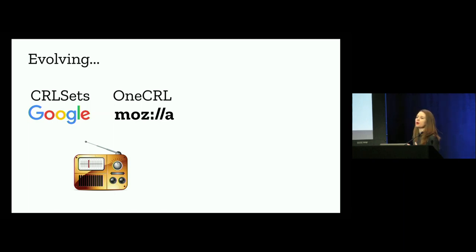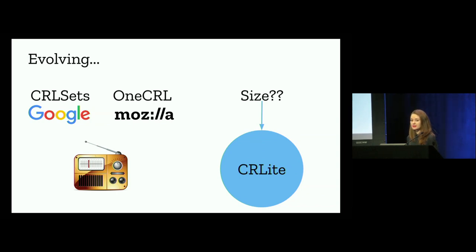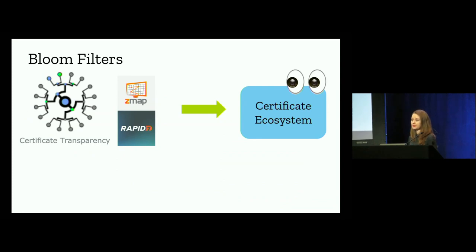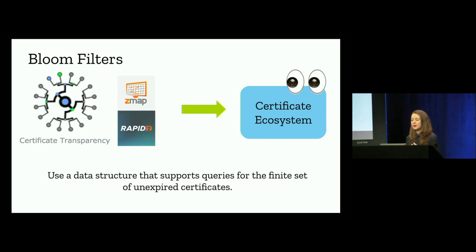Why don't we send all revocation information to clients? Well, the issue is size — it matters, and this is a lot of information. This is where CRLite comes in. CRLite aims to compactly and efficiently get all revocation information to all clients, and it does this by making very clever use of bloom filters. Because of initiatives like certificate transparency and internet scanning, we have a very good view of the certificate ecosystem. CRLite takes this view, puts all this information into a data structure that supports queries to the finite set of unexpired certificates, and this is how it gets all revocation information to all clients.